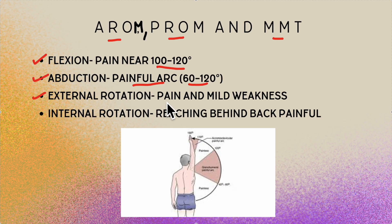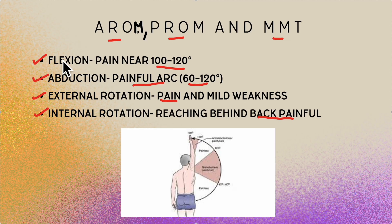In external rotation, he had pain at end range. In internal rotation, there was pain while reaching behind the back. For passive range of motion, flexion and abduction showed full range except for pain at end range. External rotation and internal rotation in supine were also painful at end ranges but not restricted.